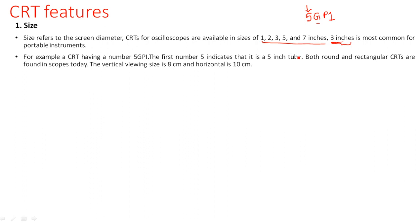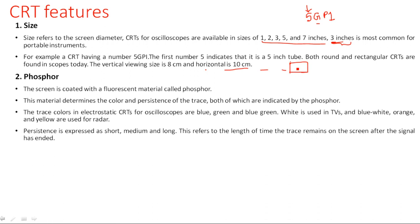The viewing screen size is generally 8 centimeters by 10 centimeters — 8 centimeters vertical and 10 centimeters horizontal — which is why it is a rectangular display. Phosphor is a fluorescent material that is coated behind the screen.